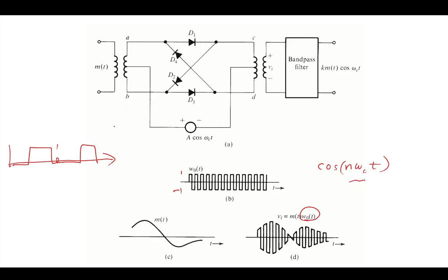So in a more complex situation, we can make this ring modulator. The ring modulator is a bit more complex. The ring modulator, instead of going from 1 to 0, goes from 1 to minus 1.